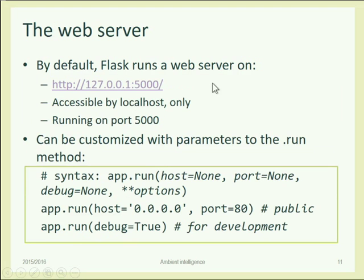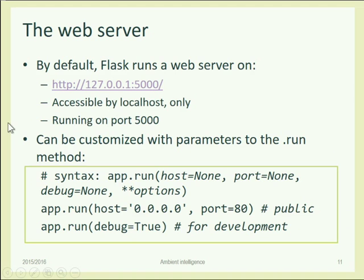You cannot have any instruction after the `run()` call because they won't be executed. From that moment on, the application starts responding to any incoming HTTP request. It starts by listening for requests on a specific TCP/IP port on your computer. By default, if you don't specify anything else, it will listen on port 5000 on the localhost interface, so it will only be accessible by a browser running on your machine — which is probably what you want when developing.